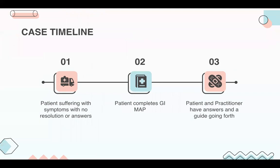If you are a practitioner, you may have experienced this common case timeline: a patient is suffering with symptoms, has no resolution or answers to their healthcare problems, and is scratching their head wondering what's going on. The patient completes a GI Map, and now both you and the patient have answers and a guide going forward. This is a very common situation in functional medicine, and the GI Map can provide you with actionable information to help guide your patient to treatments and a state of health.